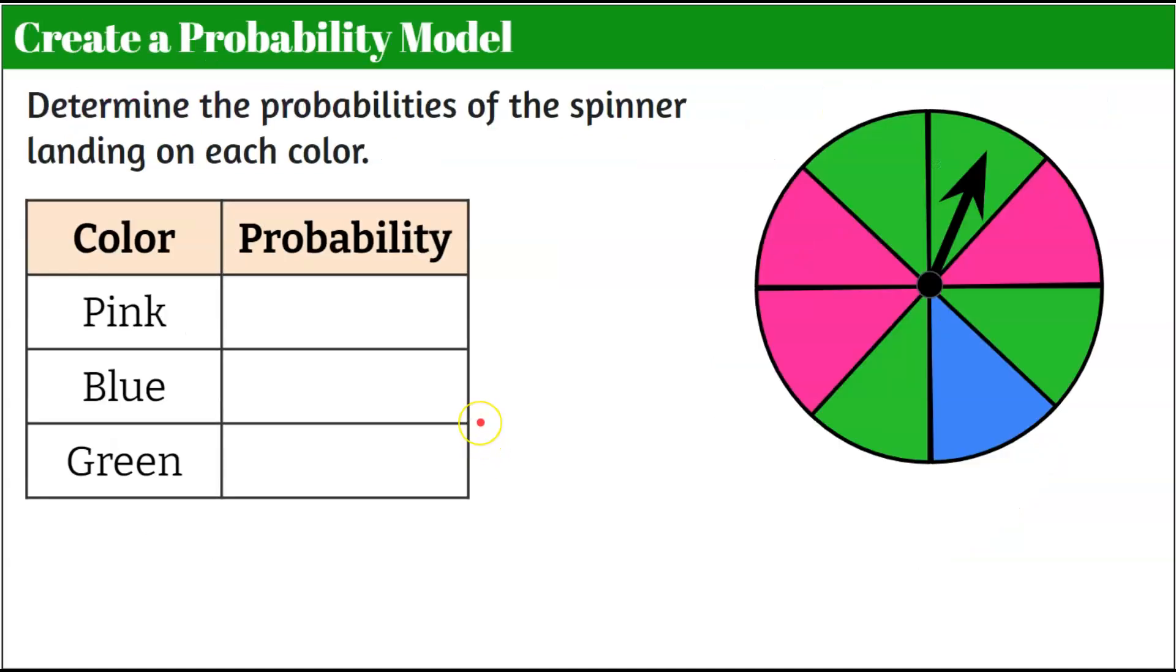Alright let's create a probability model together. We're going to determine the probabilities of the spinner landing on each color. So we're going to start by looking at pink. We can see that this spinner is divided into eight equal sections. So our denominator, our whole possible outcomes, is eight. We want to know how many of those eight are pink. I can see that one, two, three of the sections of the spinner are pink. So our probability is three out of eight. I'm going to leave this as a fraction because it doesn't really go to a decimal very nicely. It's a three-digit decimal so we're going to just leave it three-eighths.